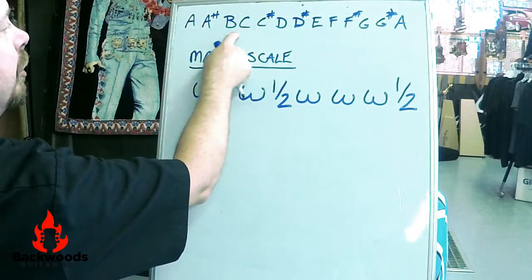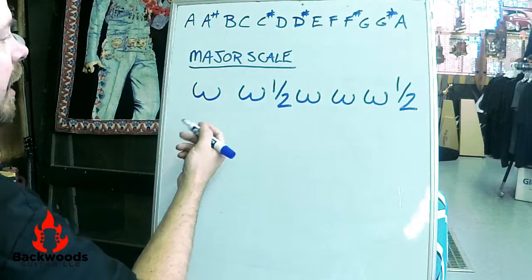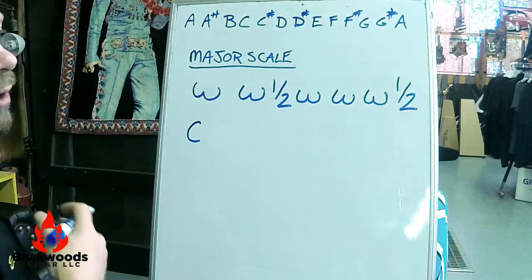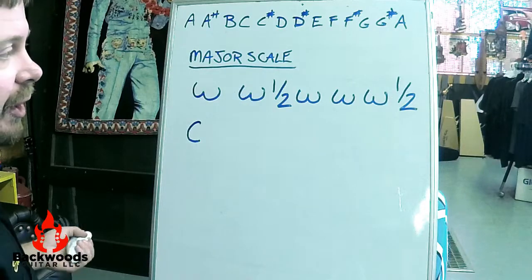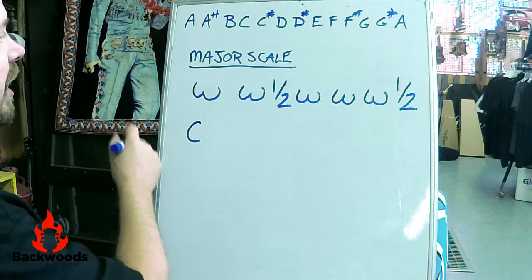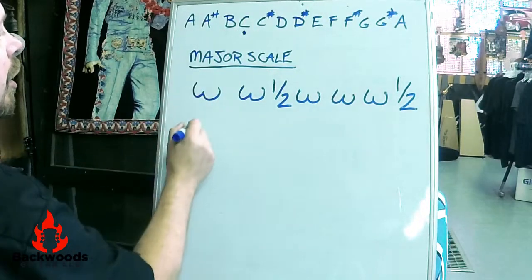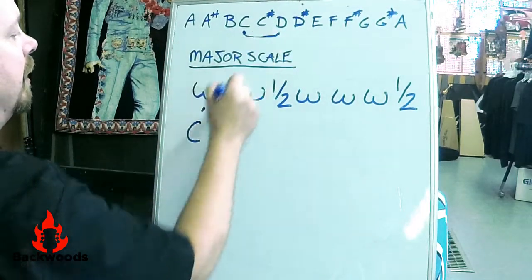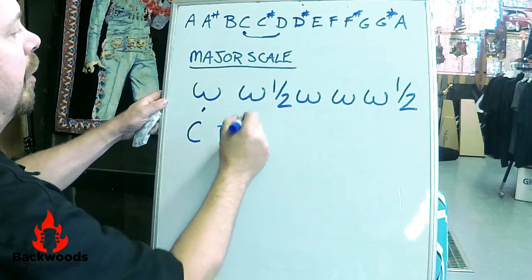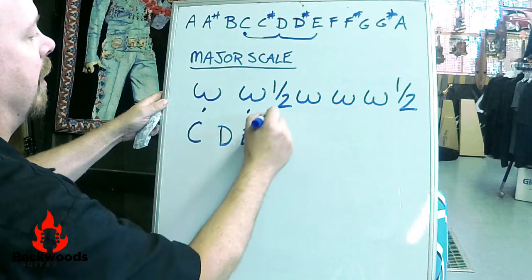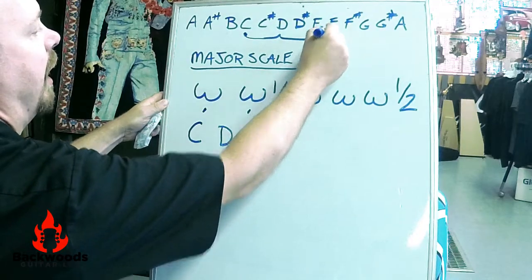Okay, so let's do one. Let's write out a C scale because C has no sharps or flats. It's the easiest one. So let's start with C and use our recipe and see what we get. So we're going to start with C, whole step, D, whole step from D, E, half step from E, F.